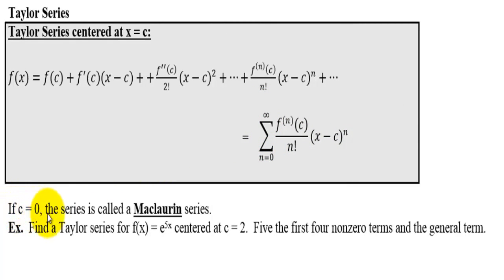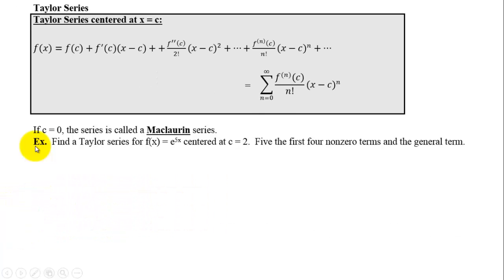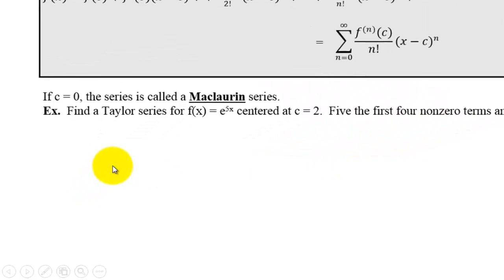If c equals 0, this series is called a Maclaurin series. Example: find a Taylor series for f of x equals e to the 5x centered at c equals 2. This should say find the first four nonzero terms and the general term.